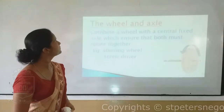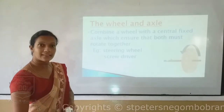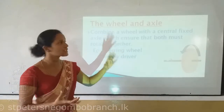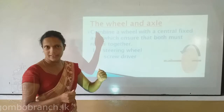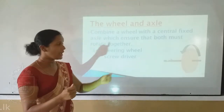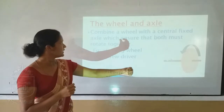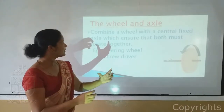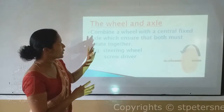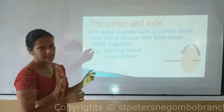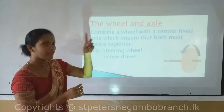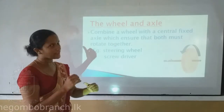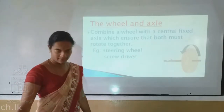The next one is the wheel and the axle. A very good example for the wheel and the axle is the steering wheel. You know that when we are turning the steering wheel, both the circular part and the central fixed axle are rotating. That is what is special about this wheel and axle — both the wheel and the axle rotate together.